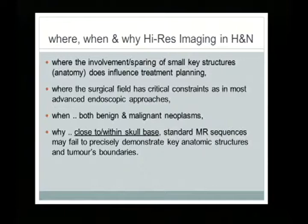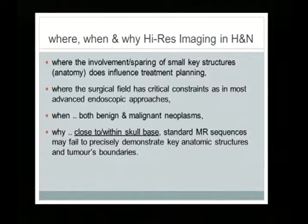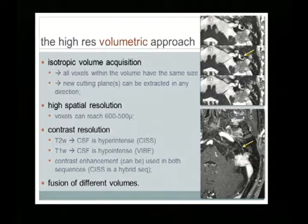I want to address one part of the neck field where involvement or sparing of small structures — mostly arteries and nerves — really influences treatment planning. These are areas where the surgical field may have critical constraints, as in most advanced endoscopic approaches. I will address the paranasal sinuses and involvement of the skull base, where standard MRI sequences may fail to precisely demonstrate and map key anatomic structures and tumor boundaries.